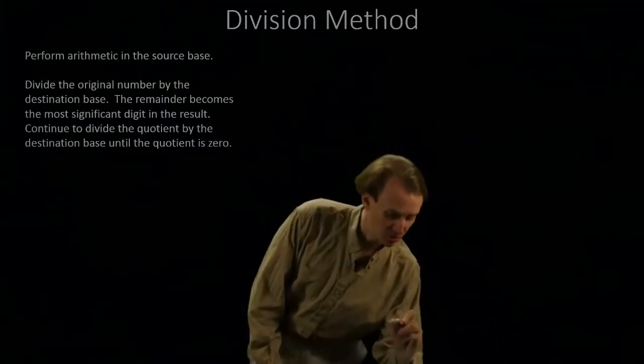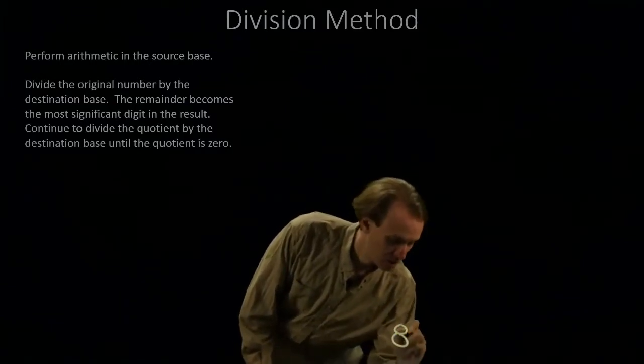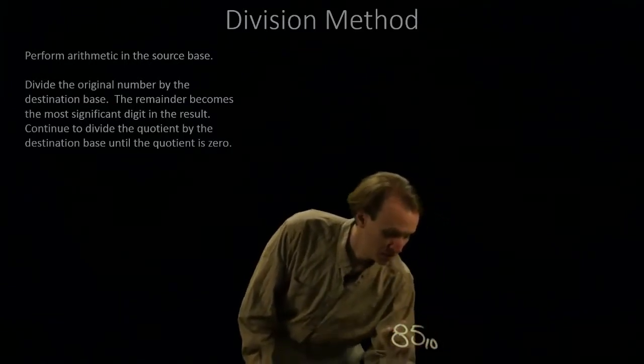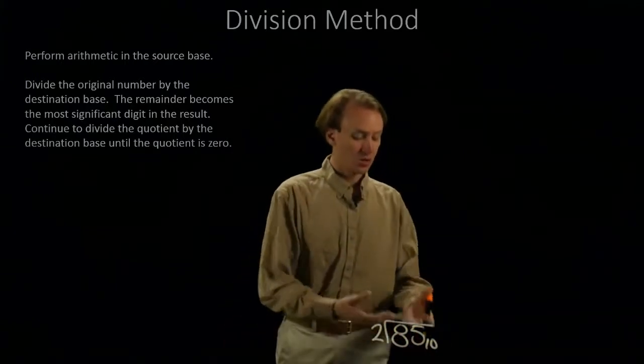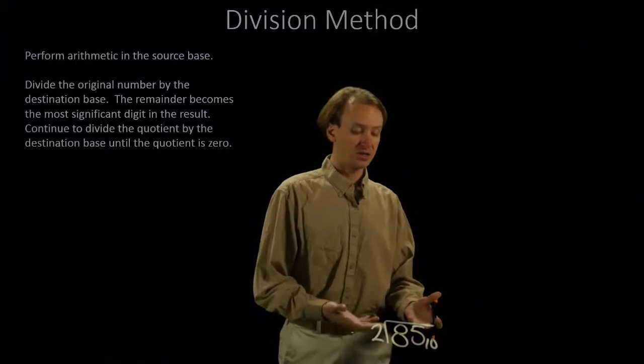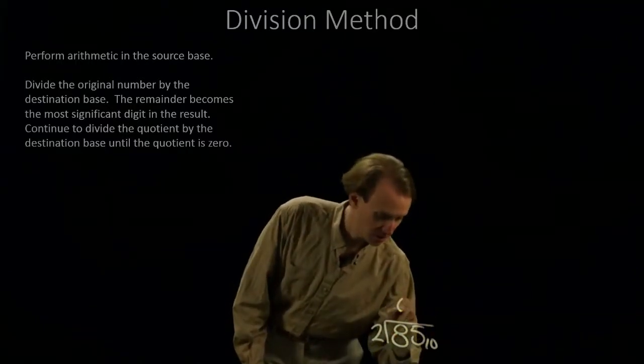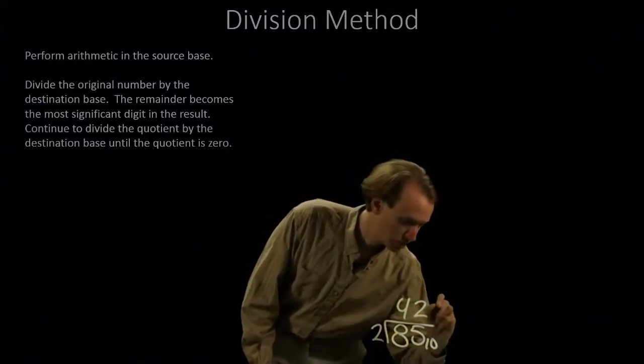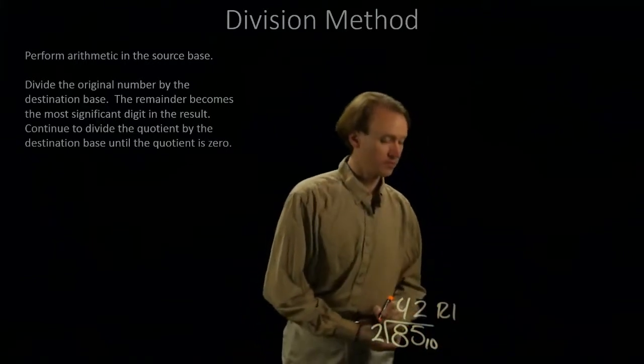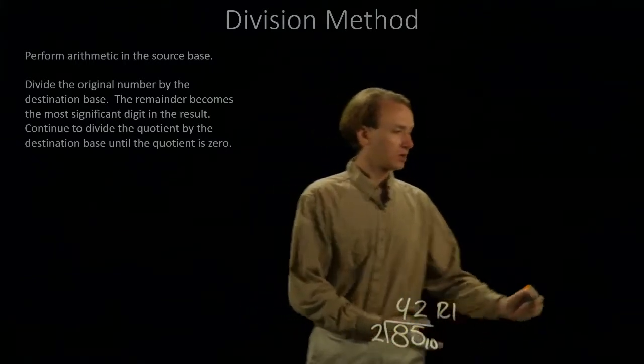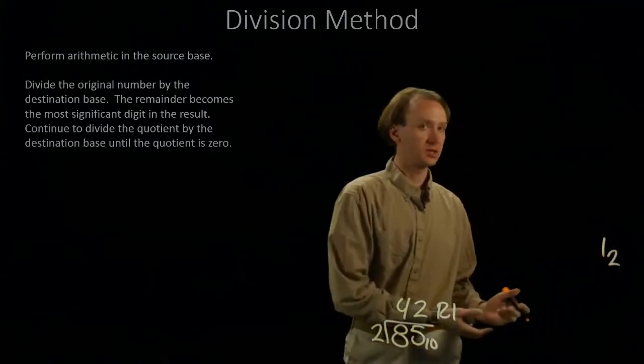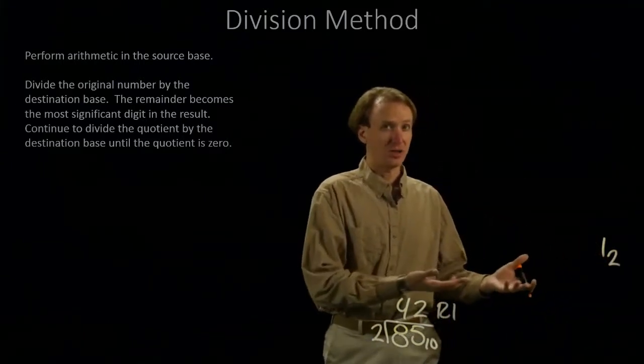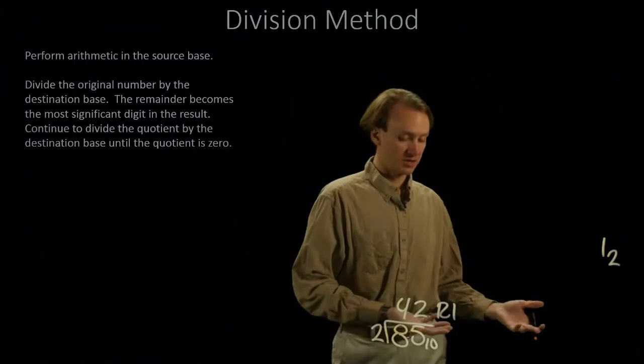If we start with a number like 85 in base 10 and we want to convert this to base 2, I'm going to start by dividing by 2. This will give me 42, remainder 1. I'll take this 1 and I'll write it down. That is now my most significant bit. Of course, I don't have any other bits, so it's also my least significant bit.